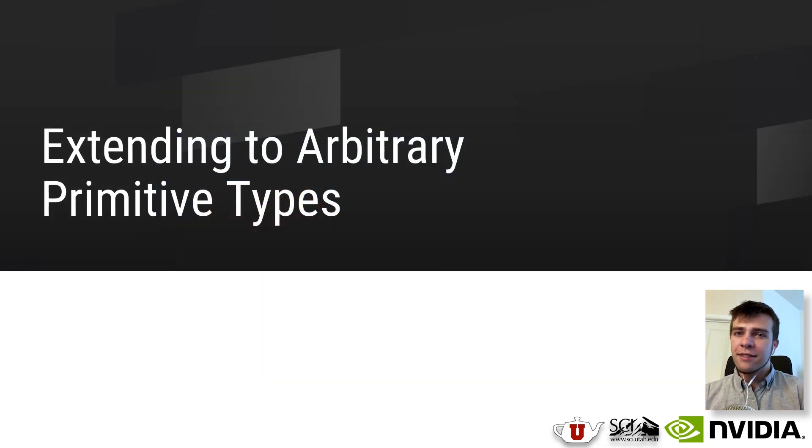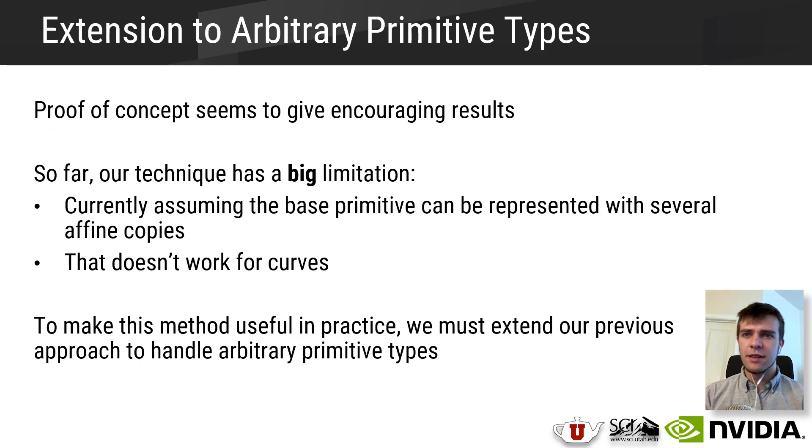Now, although we have this proof of concept that seems to be giving us really encouraging results, our technique so far has one big limitation. Right now we're making this assumption that the base primitive type that we're using can always be represented with several affine copies of a common base primitive. However, this really only works for cylinders, and it doesn't work for other primitive types like curves, since each curve is likely to be unique. So to really make this method useful in practice, we need to extend our previous approach to handle arbitrary primitives like rounded cylinders, curves, and so on.